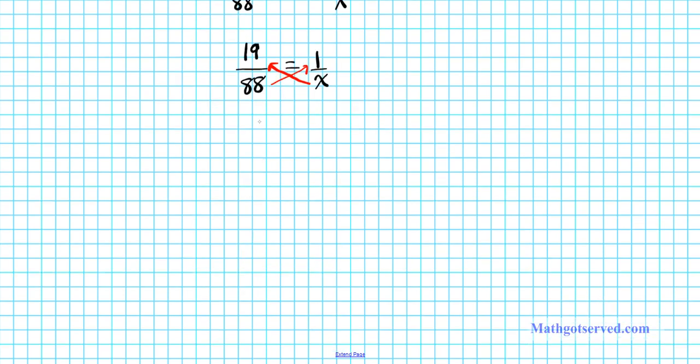It gives us 19x equals 88. Now we'll divide both sides of the equation by 19 so we can isolate x, the time it'll take them to complete that one job if they're working together.